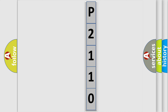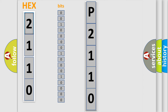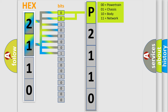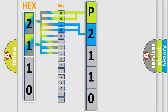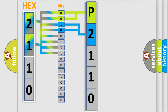The error code is split into two bytes consisting of 16 bits. One bit is the basic unit that each computer works with, and it has two logical states: zero (low level) and one (high level). By combining the first two bits, the basic character of the error code is expressed. The next two bits determine the second character, and the last bits of the first byte define the third character of the code.